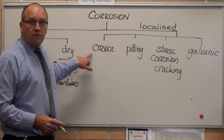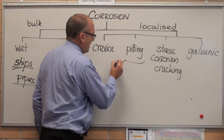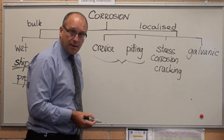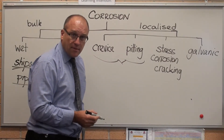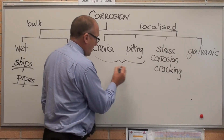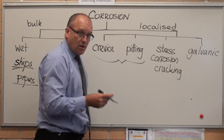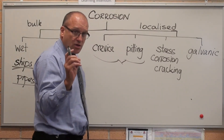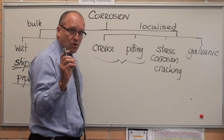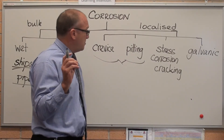Localised corrosion. Crevice and pitting are variations on the same mechanism. It's basically localised corrosion, meaning that it only occurs in tiny spots, but it happens really quickly in just a small amount of the material.